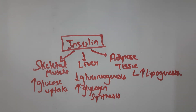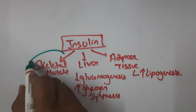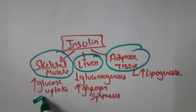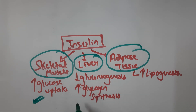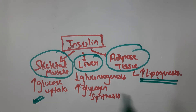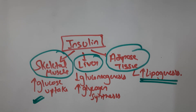Briefly, insulin acts on three basic organs: skeletal muscle, liver, and adipose tissue — all aimed at decreasing blood glucose. In skeletal muscle, insulin increases glucose uptake. In the liver, it decreases gluconeogenesis and increases glycogen synthesis. In adipose tissue, it increases lipogenesis. This concludes today's lecture on the classification, definition, and basic action of insulin. The pathogenesis and complications of diabetes will be covered in the next lecture.